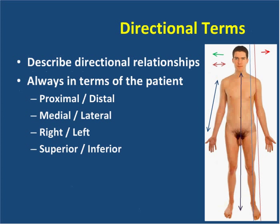We often describe findings based on relationships of one part of the body to another. The red line is pointing laterally from the patient's midline. The brown line points laterally away from the midline and medially towards the midline — this is how you would describe structures related to each other. The red line also indicates the patient's left, while the green line indicates the patient's right. When we discuss direction, it's always in terms of the patient. The blue double-headed arrow along the patient's arm describes proximal — closer to the core of the body — and distal — further away from the core. So the hand is distal to the elbow, and the elbow is proximal to the hand.